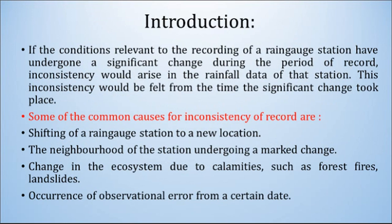If the conditions relevant to the recording of a rain gauge station have undergone a significant change during the period of record, inconsistency would arise in the rainfall data of that station. This inconsistency would be felt from the time the significant change took place. Common causes include shifting of a rain gauge station to a new location, the neighborhood of the station undergoing a marked change, change in the ecosystem due to calamities such as forest fires or landslides, and occurrence of observational error from a certain date. We must ensure that the data is corrected in the consistent range.